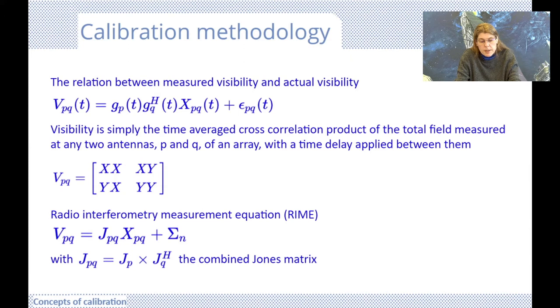To simplify our notation, we fall back on the fact that each visibility is simply the time-average cross-correlation product of the total field measured at any two antennas in our array and the time delay applied between them. So we obtain the matrix V with XX, XY, YX, and YY. And these cross-correlation products can then be described in a matrix notation, which is conveniently compact, and the matrix notation we will define as per-antenna Jones matrices, describing the many effects of the signal as it propagates from source to correlator. And the combined Jones matrix can then simply be the product of the per-antenna Jones matrices.